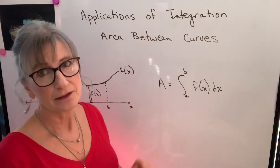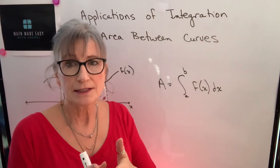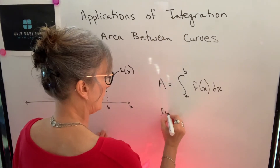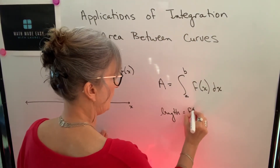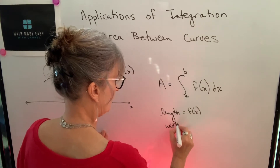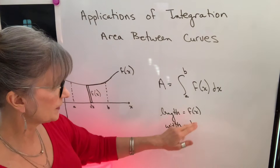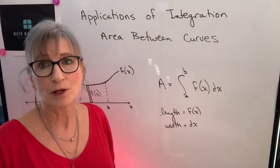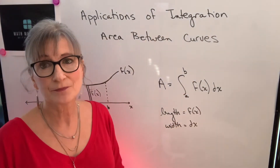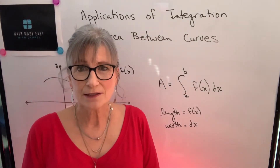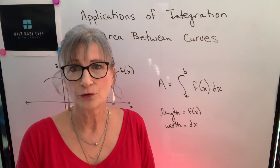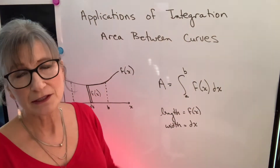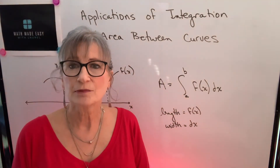That's why we use the elongated s as the symbol for integration — it's the summation process. The length of the rectangle is f of x and the width is dx. We multiply those together to get the area of one rectangle, then sum all of those rectangles from a to b to get the total area. We're going to use that idea — it's going to be fundamental for finding area under curves, volumes, centroids, and so on.